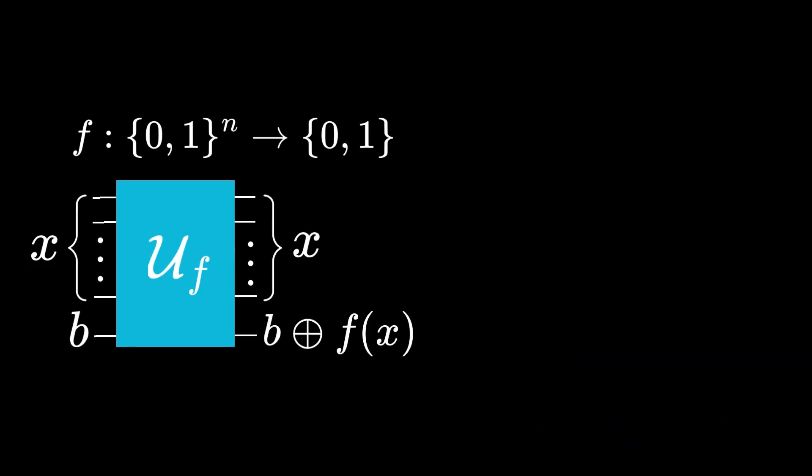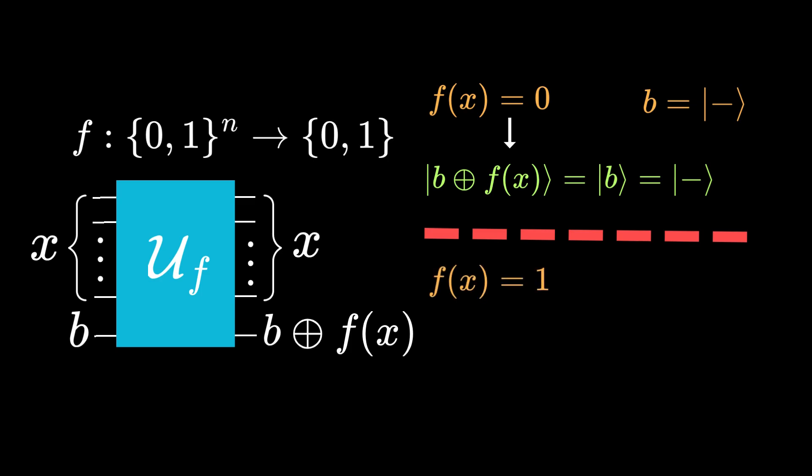Now, how many queries do we need to make from the quantum gate representing f to find u? If we set b equal to ket minus, then if f(x) = 0, then the binary sum of f(x) and b equals b or ket minus. If f(x) = 1, then the binary sum of f(x) and b equals minus b or minus ket minus.